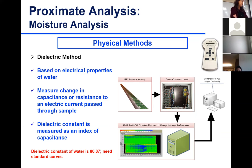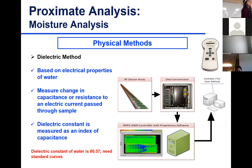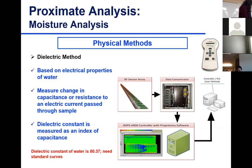There are physical methods for determining moisture content and there are many of them. There's the dielectric method, which is based on measuring the electrical properties of water. You need a standard curve for this one — prepare standards with different moisture contents, measure the dielectric constant of your sample, and use the standard curve. For pure water, the dielectric constant is 80.37.